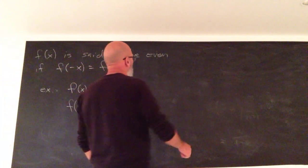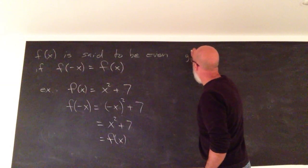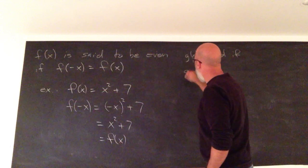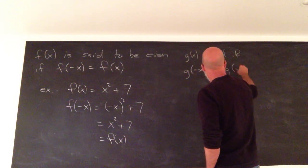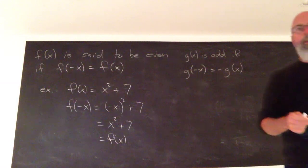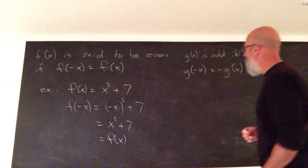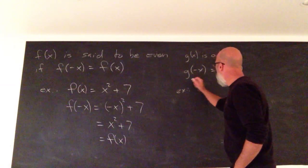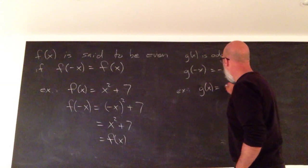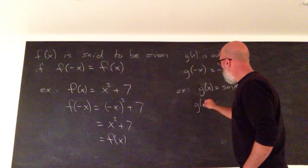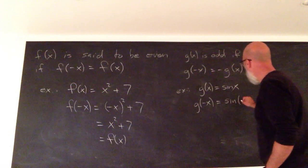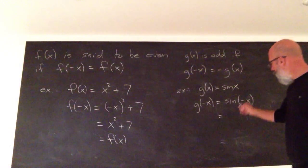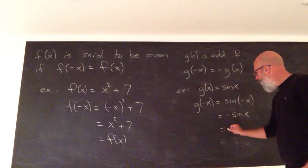We also had odd functions. g(x) is odd if g(-x) equals negative g(x). And again, you have obvious examples. If g(x) is sine x, g(-x) is sine of negative x, and by properties of the sine function this is the same as negative sine x, which is negative g(x).